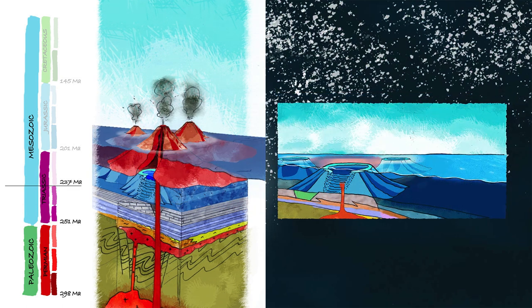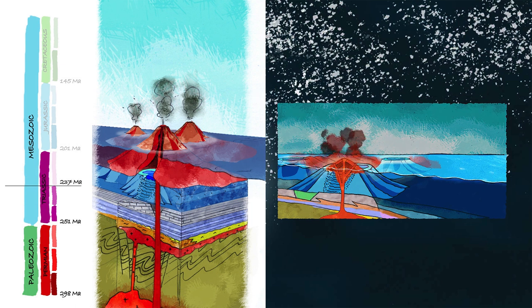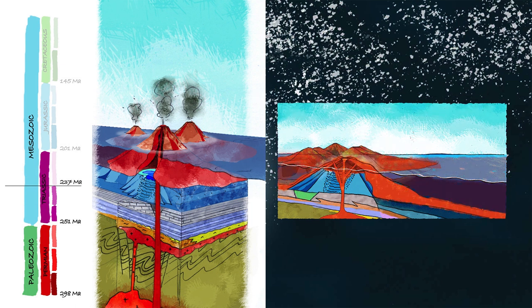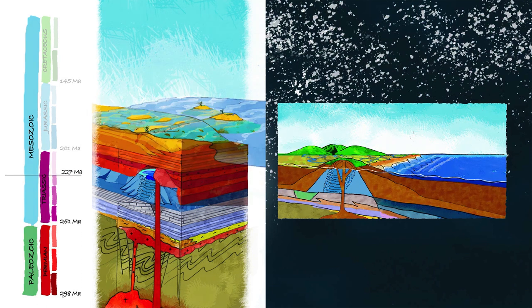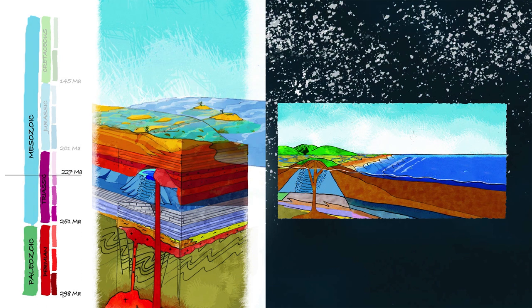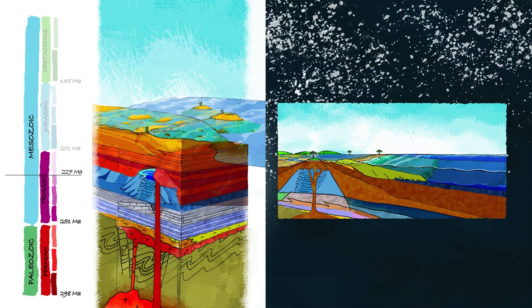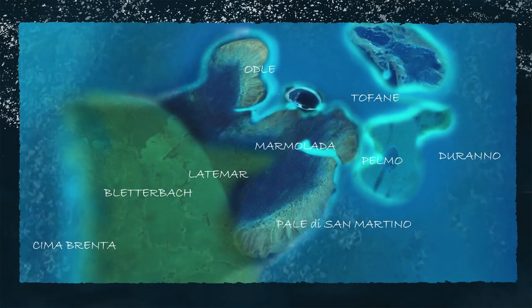The growth of the Dolomite archipelago was halted about 238 million years ago by a series of sudden volcanic eruptions in the region. However, the subsequent arrival of organisms such as coral led to the creation of new and even larger carbonate platforms.